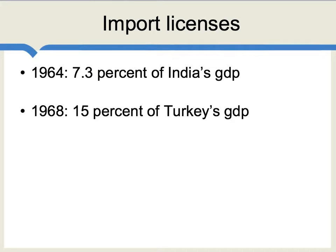For much more on rent-seeking, see your unit devoted to the concept of corruption. Ann Kruger was the first economist to try to come up with an empirical estimate of how important rent-seeking was for developing economies. It's now commonly believed that corruption and rent-seeking behavior are one of the very most important problems faced by poorer countries.